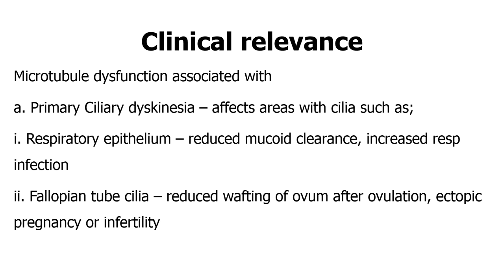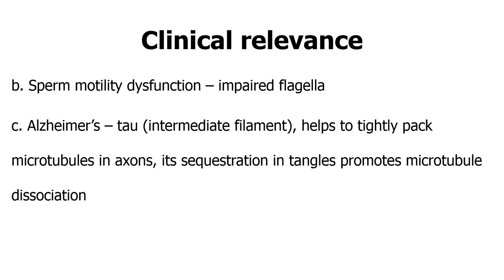The same dysfunction applies to fallopian tube cilia, which should waft the ovum after ovulation. This increases the chances of ectopic pregnancy, especially at the ampulla, because the ovum cannot be moved once fertilization occurs. Infertility can also result, as the ovum cannot be wafted to an area suitable for fertilization. Sperm motility dysfunction occurs because the microtubular system makes up the flagella of the sperm, so if dysfunctional the sperm are unable to move.